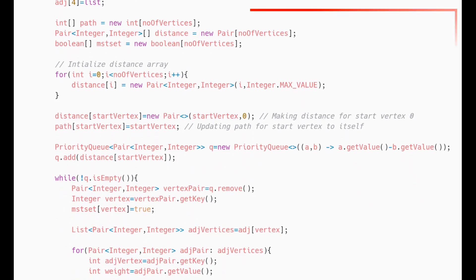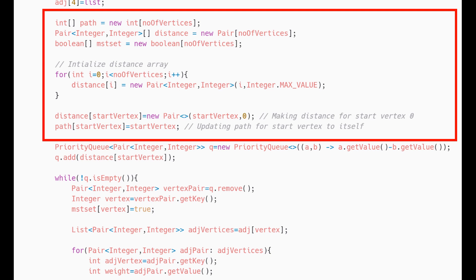we will initialize our two arrays path and distance of size equal to the number of vertices. We will then fill the distance array with pair of vertex and distance as 1 and updating the distance for the start vertex to 0 and path to itself.